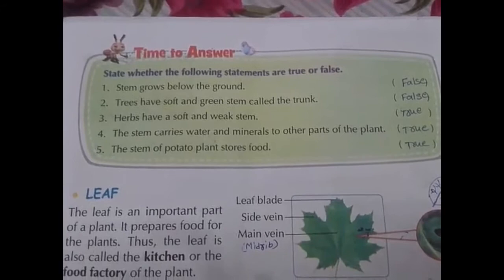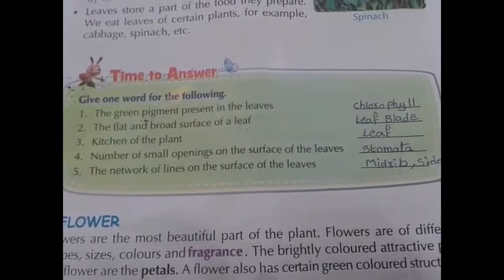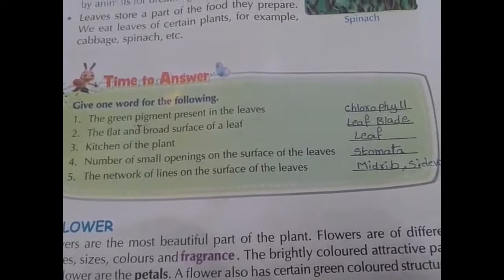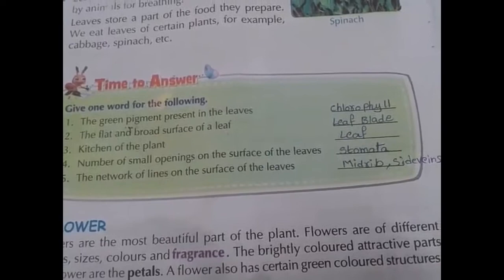Page number 78, fill in the blanks: The green pigment present in the leaves is chlorophyll. The flat and broad surface of the leaf blade. The kitchen of the plant is the leaf. The number of small openings on the surface of leaves are stomata. The network of lines on the surface of the leaves: midrib, side veins.